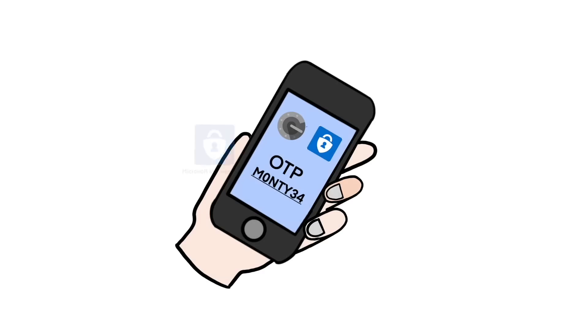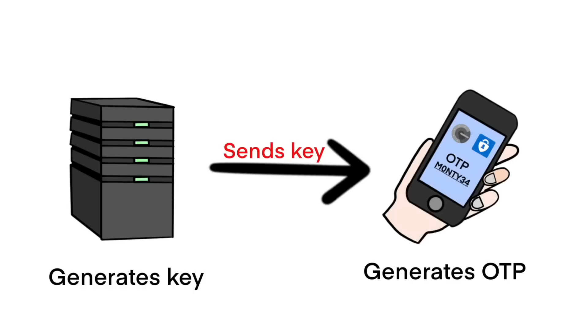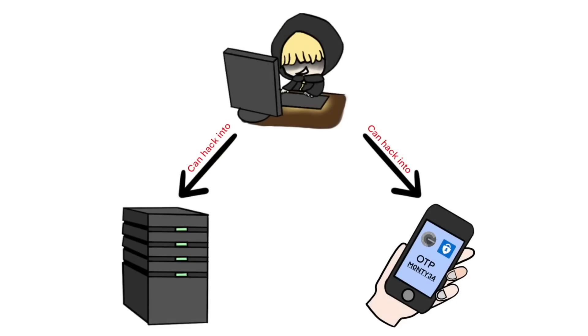A step up is the soft token, which requires you to use an authenticator app. The service will generate a secret key, which you'll usually scan into an authenticator app, and that key is used to generate a random number that expires between 30 seconds and five minutes. The biggest downside of this method is that the secret key could be stolen from the service or from your device, which means a bad actor can still easily claim to be you.